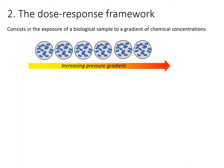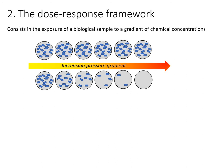It consists in the exposure of a biological sample — it could be a population or community — to an increasing gradient of chemical concentration. After a certain time of exposure to the chemical, the biological parameter is measured to assess the effect. Generally, that could be growth, mortality, or photosynthesis, depending on the biological organisms.